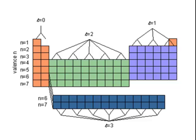The same is true for period 3 — you're filling 3s and 3p for a total of 8 elements. Now when you move across the fourth period on the periodic table, the sublevels being filled are 4s, 3d, and 4p.